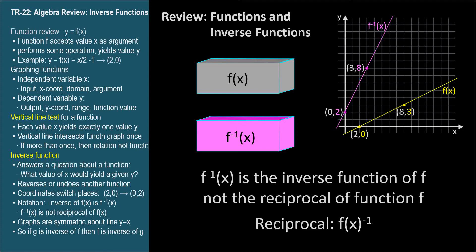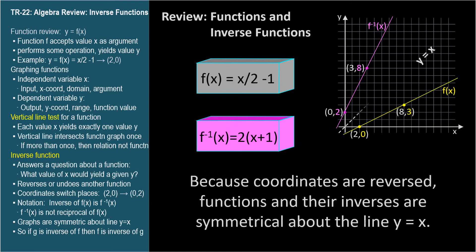If a function returns y with an argument of x, then its inverse function returns x with an argument of y. Because coordinates are reversed, functions and their inverses are symmetrical about the line y equals x.